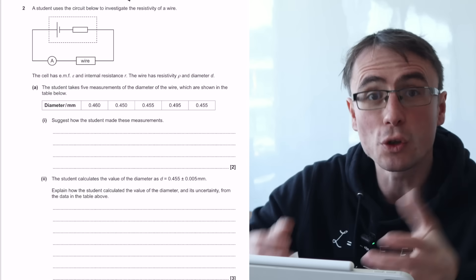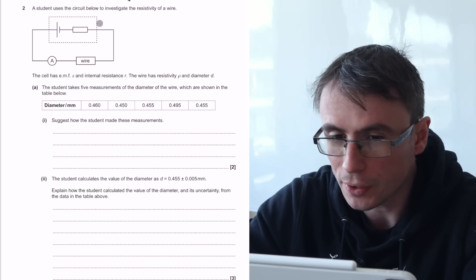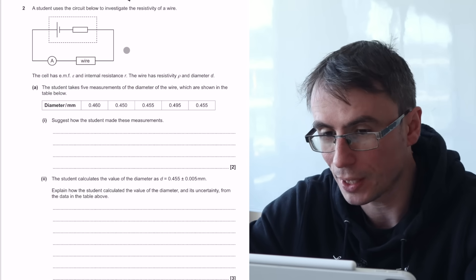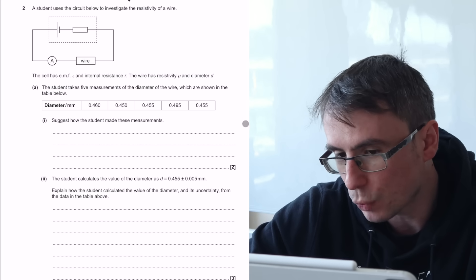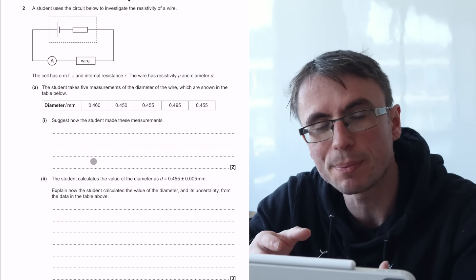With exam season approaching fast, in this video we're going to have a look at as many useful tips to try and help increase your grade. So let's solve this paper 3 question. We start off with a familiar circuit. The student uses the circuit to investigate the resistivity of a wire. Then we have several different readings. Suggest how the student should have made these measurements.